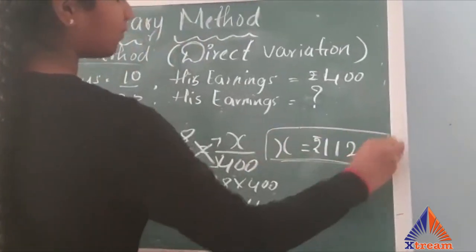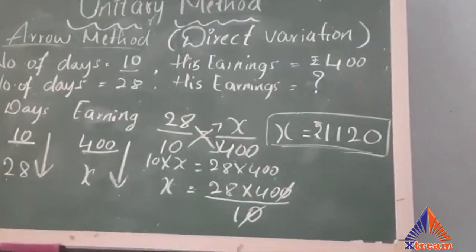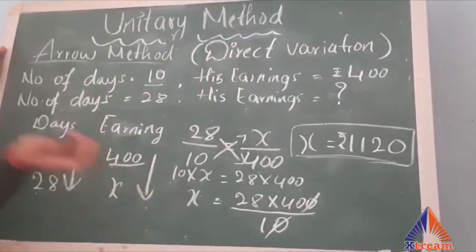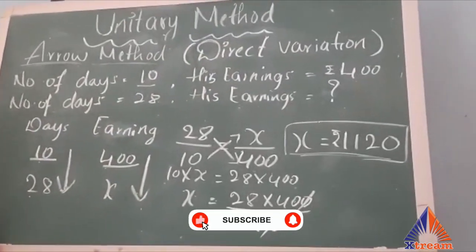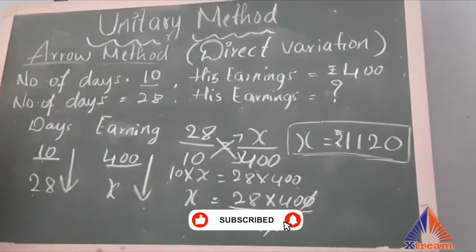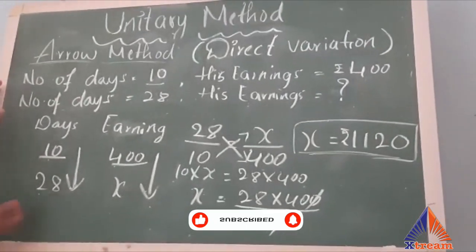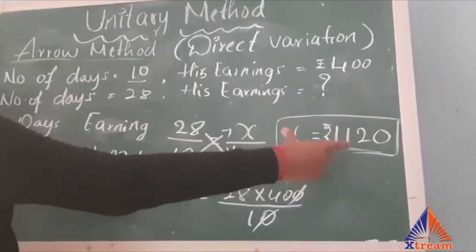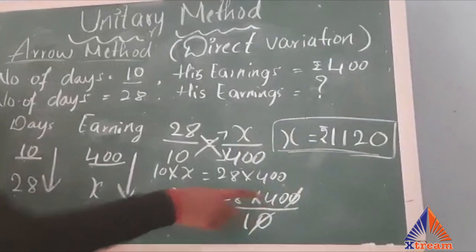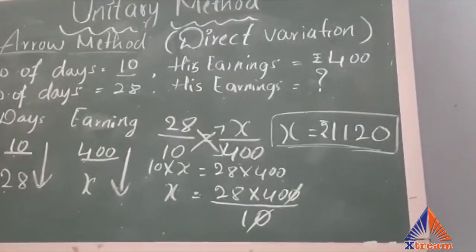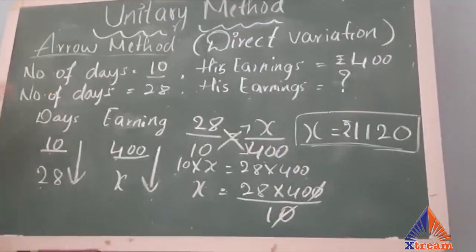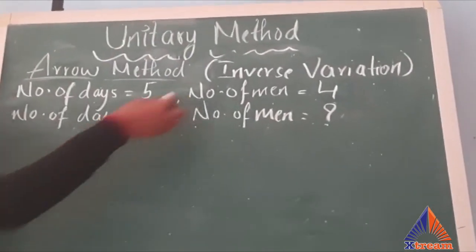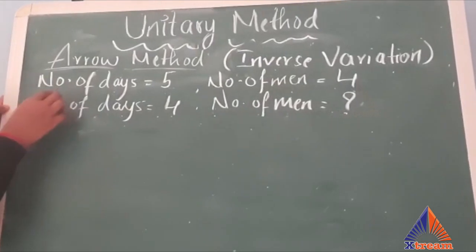This is how you find the value of x in the arrow method for direct variation. The step-by-step process gives us a final answer of rupees 1120. Now let's look at another question which is of inverse variation in arrow method.